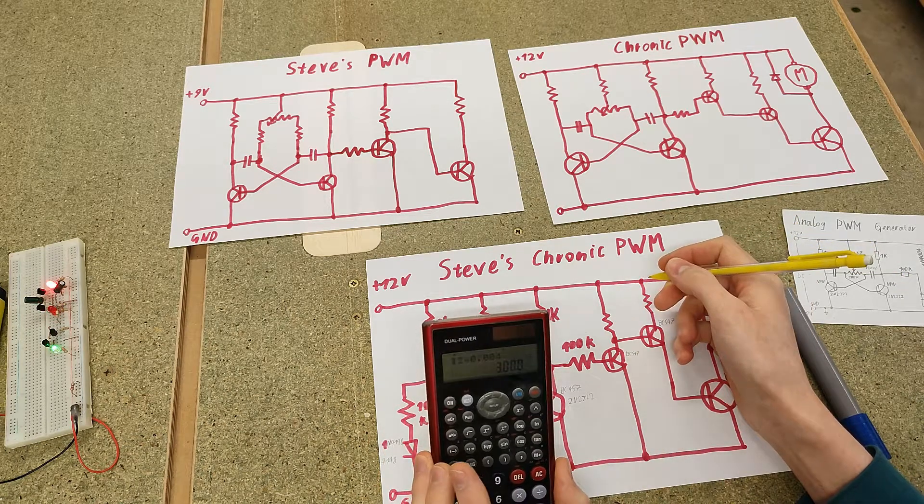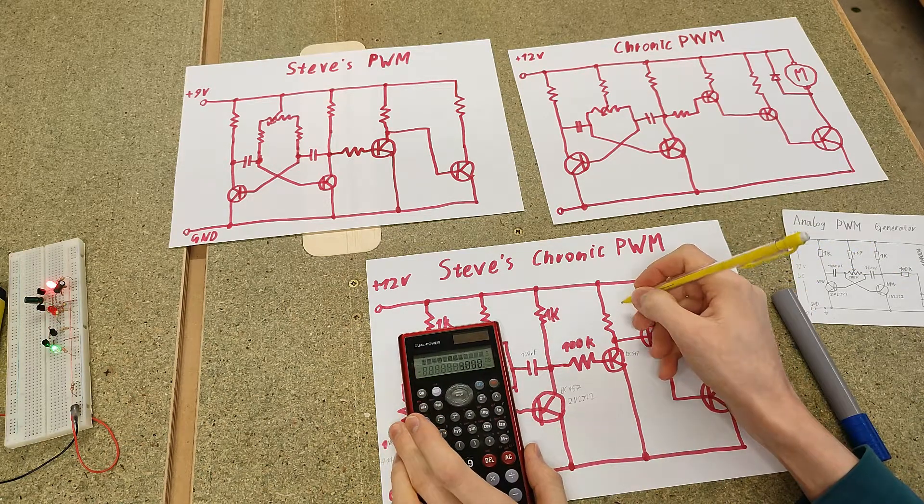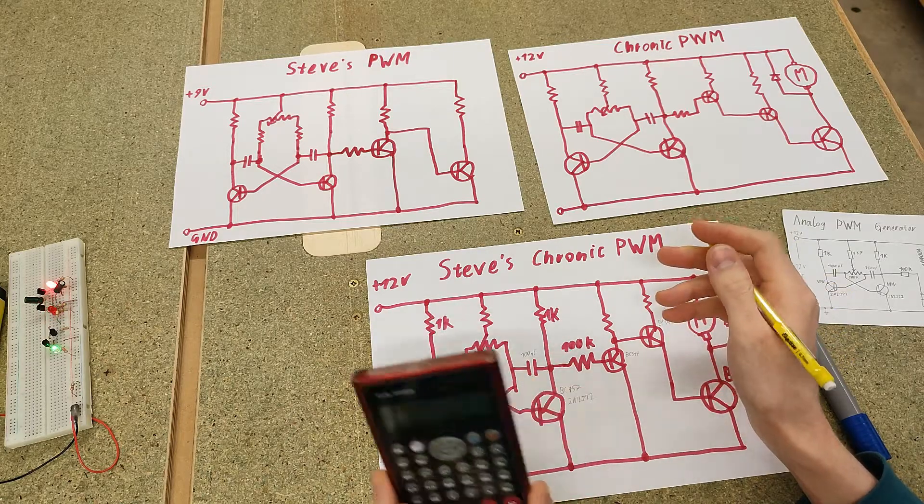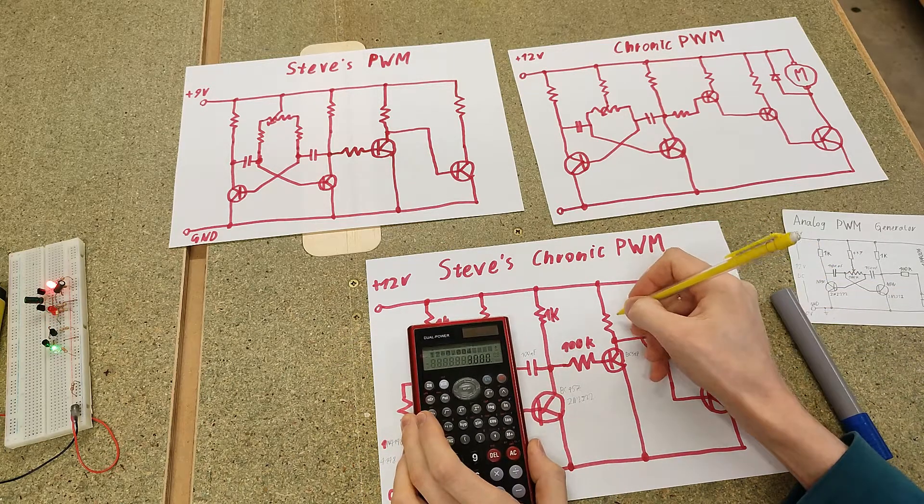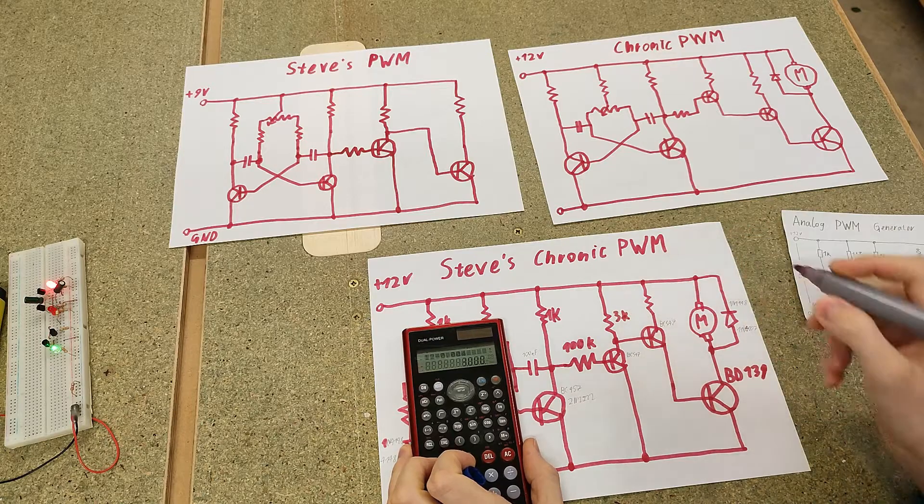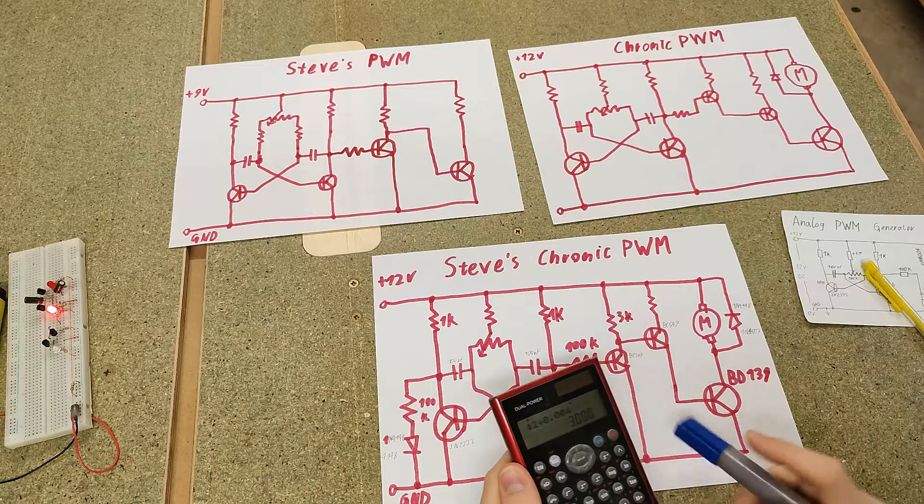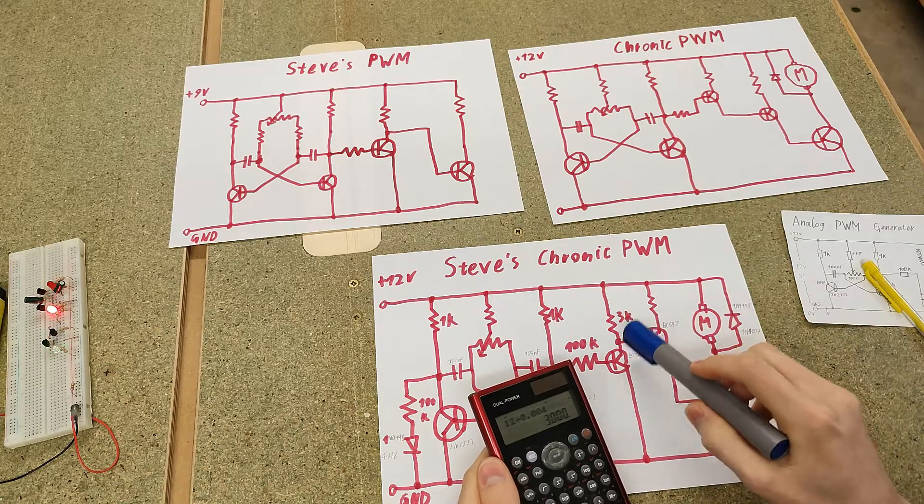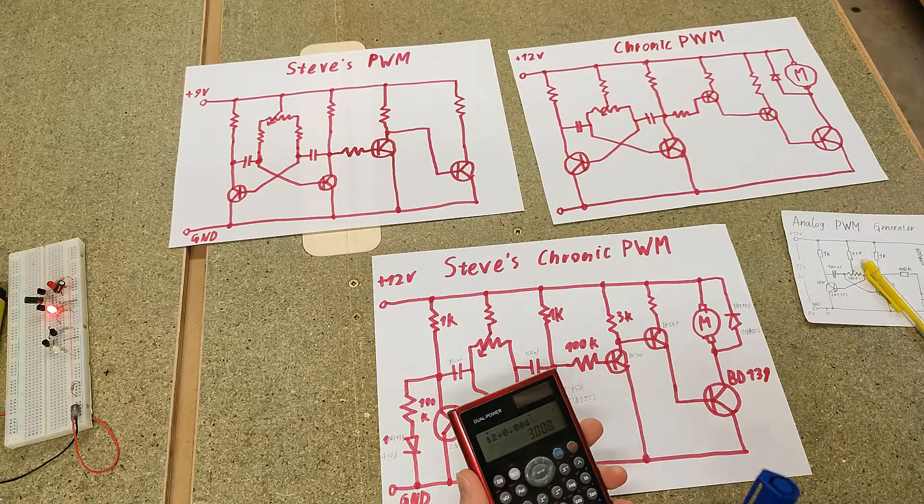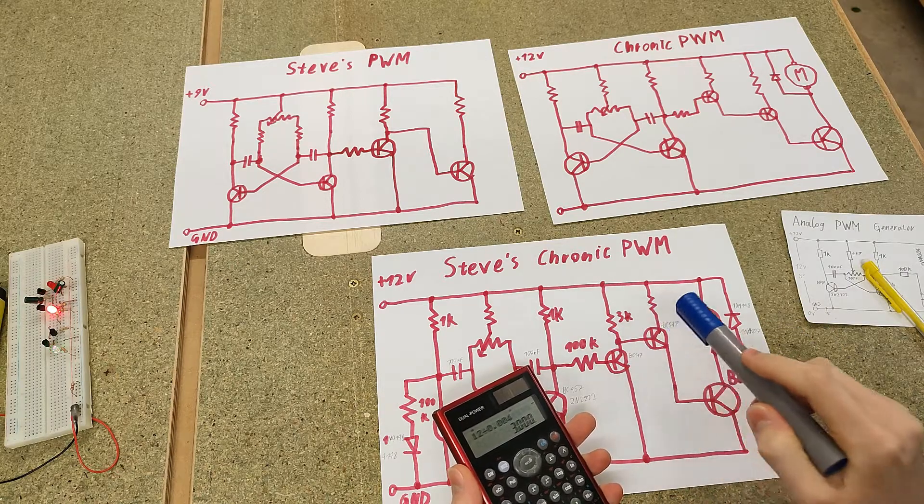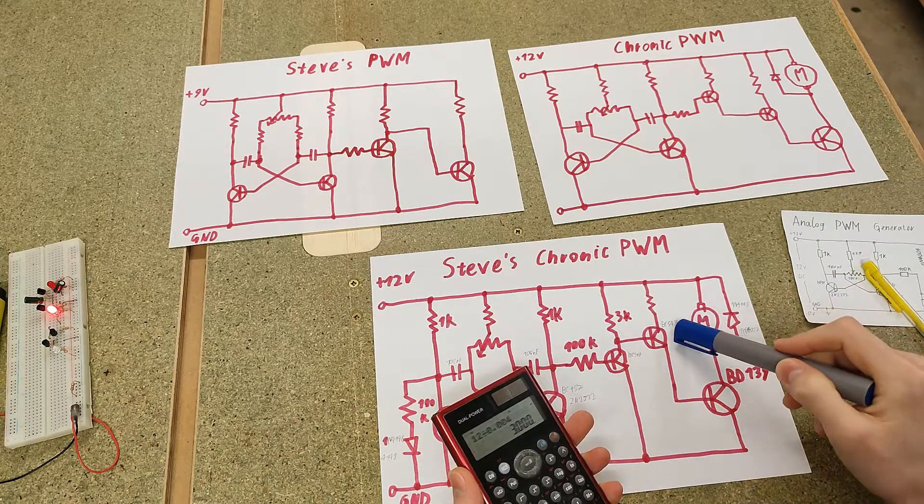So no, there is a 3K resistor. It's not really that critical. I'm going to put 3K. Let's just put 3K. It's not that much of a standard value, but good enough. Then now we have a current of 4.7mA here. Now we can calculate what kind of current this transistor can switch.